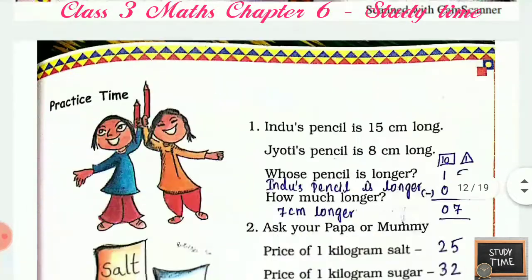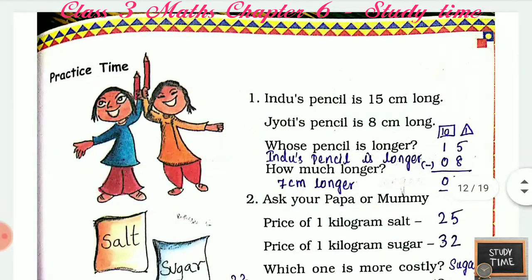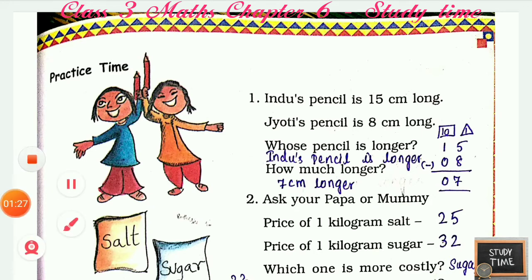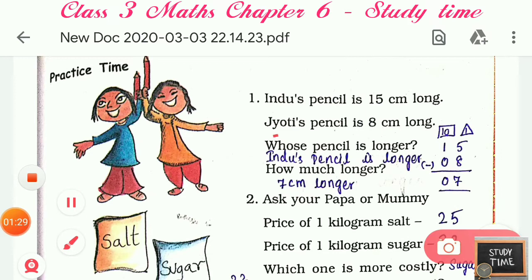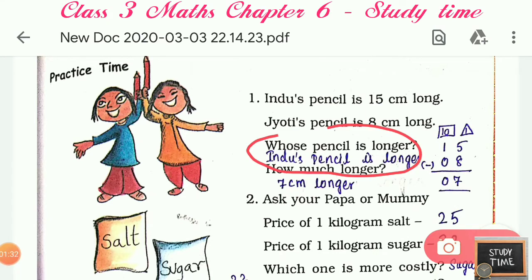Next, Practice Time: Hindu's pencil is 15 centimeters long, Jyoti's pencil is 8 centimeters long. Whose pencil is longer? We know that Hindu's pencil is longer. How much longer? 15 minus 8 — the answer is 7, so Hindu's pencil is 7 centimeters longer.